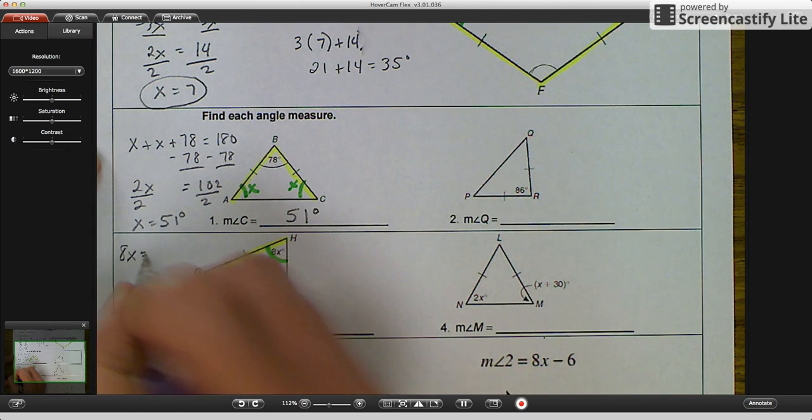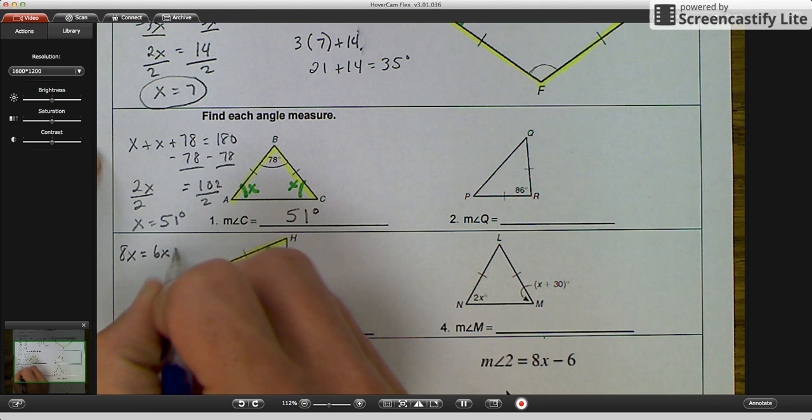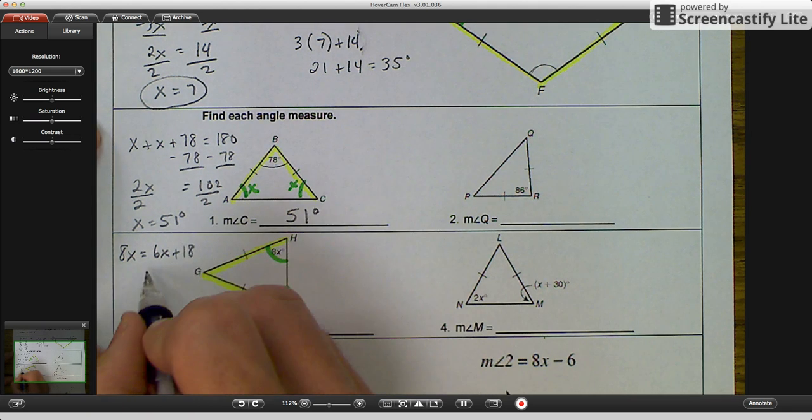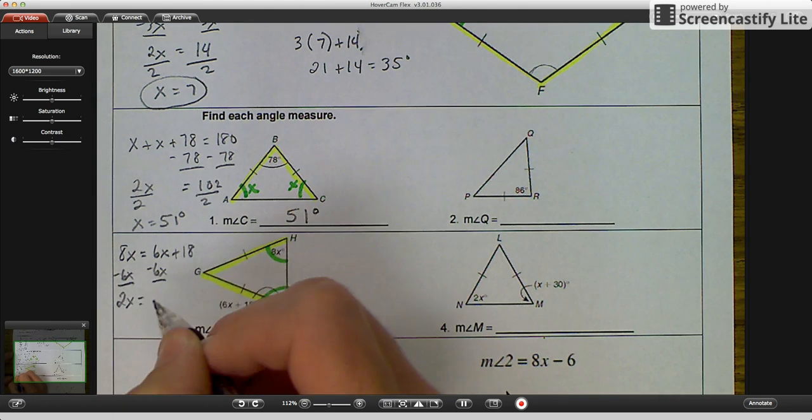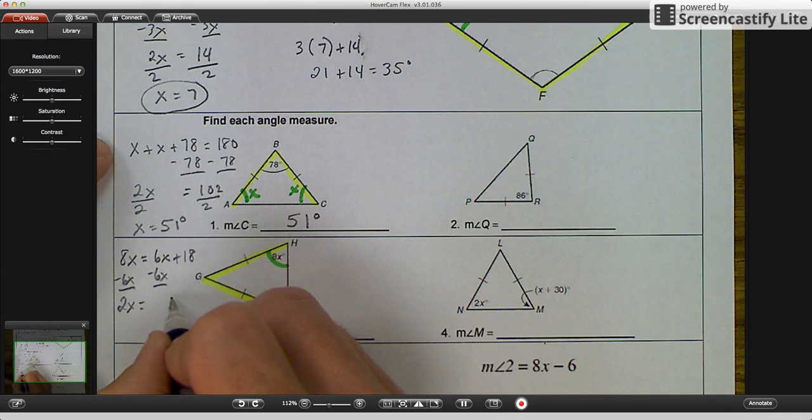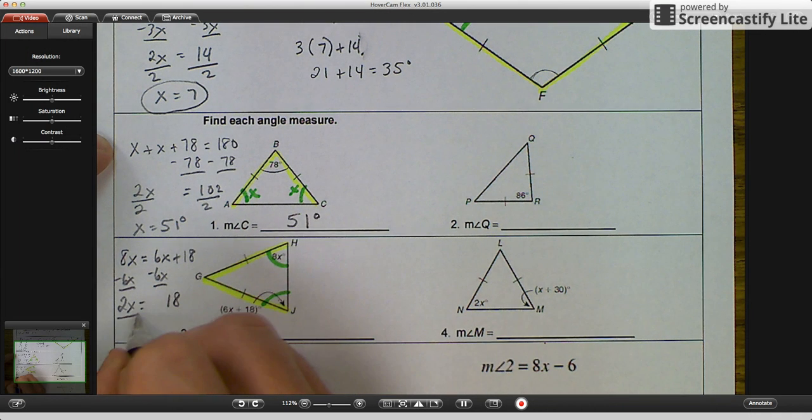Base angles, it says on the isosceles that they are congruent. So congruent means they're equal. So 8X is equal to 6X plus 18. And then I'm going to solve for X minus 6X minus 6X. You get 2X is equal to 18. Divide by 2, you get X is equal to 9.